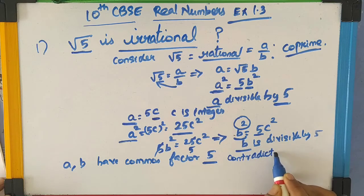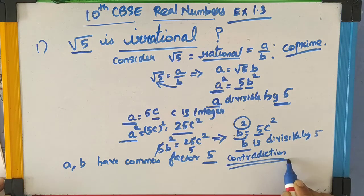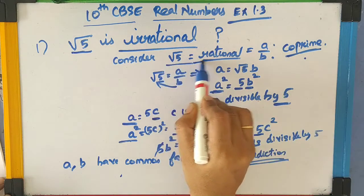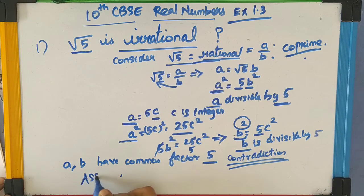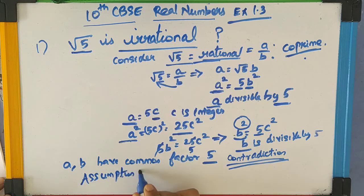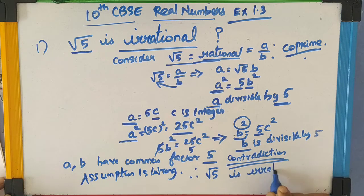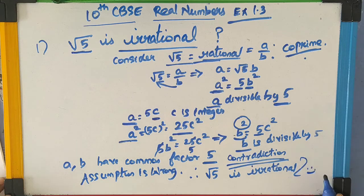This contradiction arises because the first assumption we made — that square root of 5 is a rational number — is wrong. Since we started the sum with a wrong assumption, we ended with a contradiction. So we can prove that square root of 5 is an irrational number.